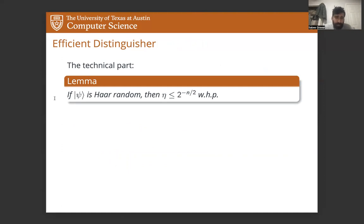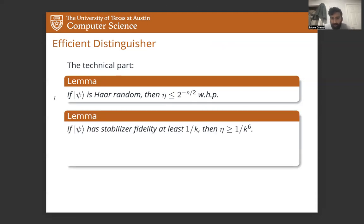Now the technical part is showing that our choice of eta actually works. So that comes down to two lemmas. First, that if psi is random, then eta will be close to zero. And if psi has non-negligible stabilizer fidelity, meaning it's a low stabilizer complexity state, then eta will also be non-negligible. And another way to write the second lemma is that with eta, you can get an upper bound on the stabilizer fidelity of a quantum state. And this is the first property of a quantum state that we know of that you can efficiently estimate and also gives you some upper bound, non-trivial upper bound on the stabilizer fidelity. This first lemma uses pretty standard techniques to prove, and I'm not going to give any details about it in this presentation. But we're going to spend a little bit of time talking about this second lemma.